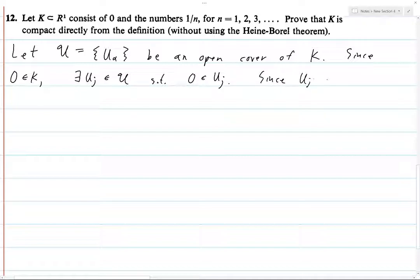Now since Uj is open, which is obvious because of the fact that it's contained in the open cover, there is an open interval, or neighborhood of some point, we'll call it A, B,